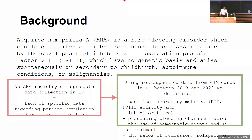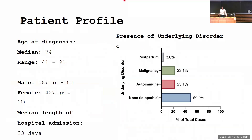There is currently no AHA registry or data collection in BC, so specific data is quite limited. Our main objective was to use retrospective data from AHA cases between 2018 and 2023 to determine benchmark lab metrics and presenting characteristics. The median age of diagnosis was 74 years, and unlike congenital hemophilia which is X-linked, the spontaneous nature of AHA means there's a near even distribution of males and females. 50% of cases were also idiopathic, meaning there was no underlying condition.